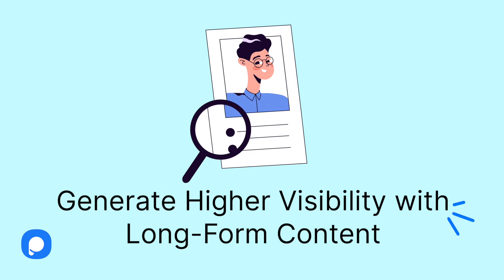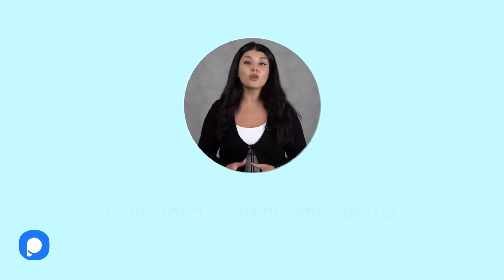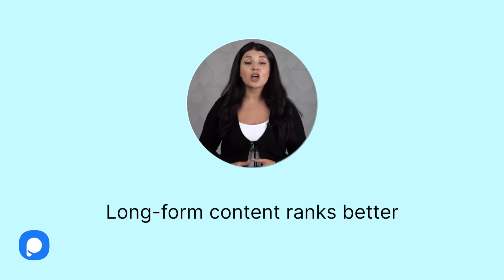4. Generate higher visibility with long-form content. Many people who deal with content marketing know that long-form content ranks better. Plus, long-form content has a tendency to be shared more. That means it improves your online visibility and conversions. For example, the average word count of results on Google's front page is 1890 words. So, generating long-form content is definitely worth trying.